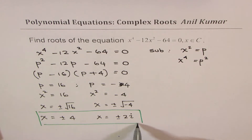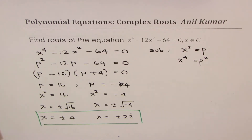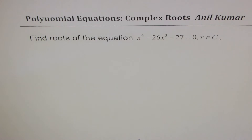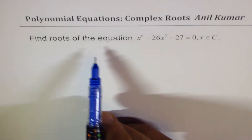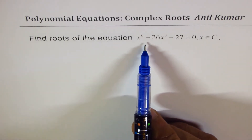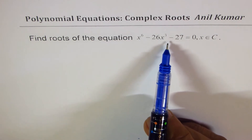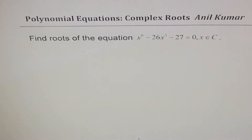So I hope the concept is absolutely clear. In the next video, I'll take up to the power of 6 and provide a link for that. Let's do a polynomial with degree 6 as an equation to solve. We'll solve this equation in the domain of complex numbers. The question is: find roots of the equation x to the power of 6 minus 26x cubed minus 27 equals to 0, where x belongs to complex numbers.